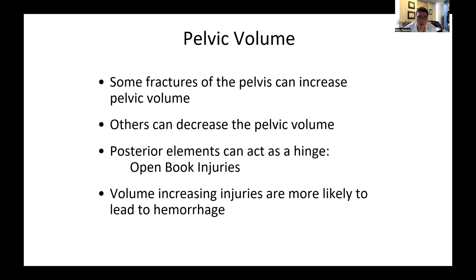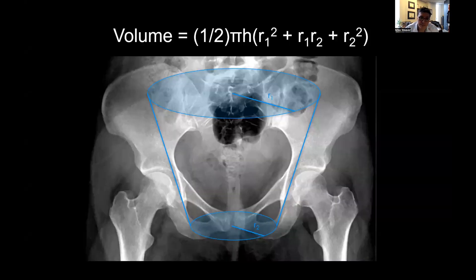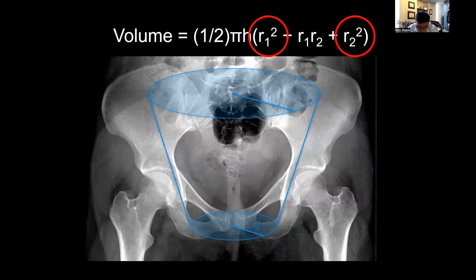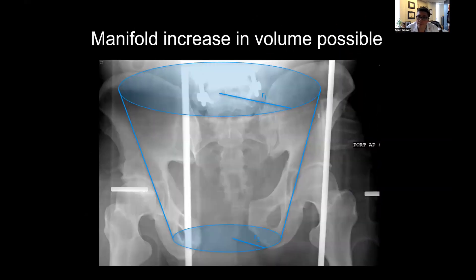Another important concept is pelvic volume. Some fractures, particularly APC-type fractures, increase pelvic volume. The problem is that more volume means more space for blood to accumulate. The equation for a portion of a cone — which is roughly the shape of the inside of the pelvis — is related to radius squared. That means that even a few centimeters of diastasis in the front can double or triple the volume inside the pelvis very quickly. Patients can lose liters of blood into their pelvis, making these potentially life-threatening injuries when untreated.